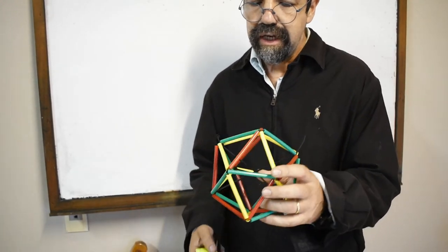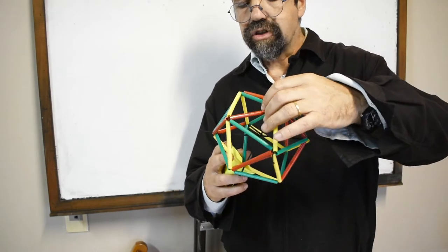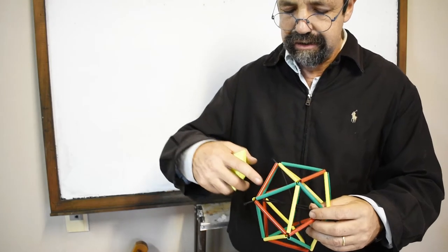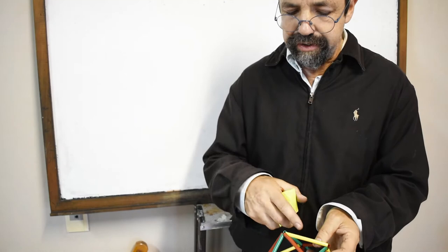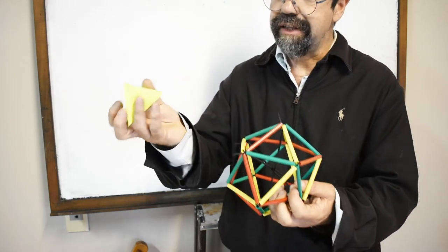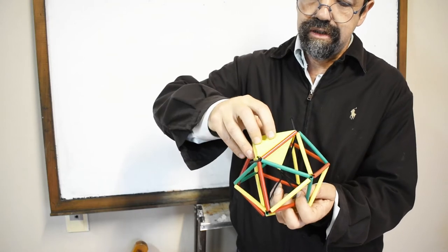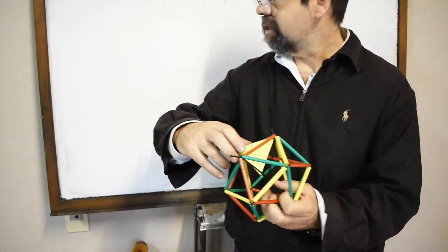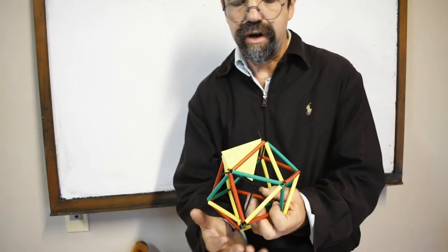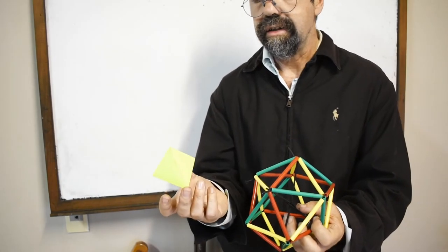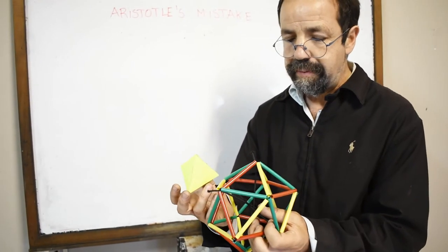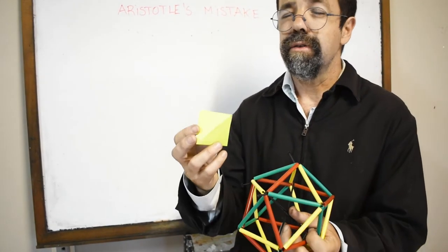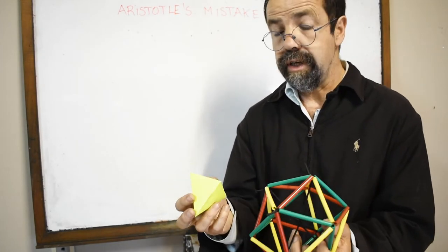This is the vertex. The icosahedron can be broken down into 20 equal pyramids that are tetrahedrons, like this one. Aristotle believed that since this was regular, these 20 tetrahedrons had to also be regular, and he stated that 20 regular tetrahedrons formed a regular icosahedron.